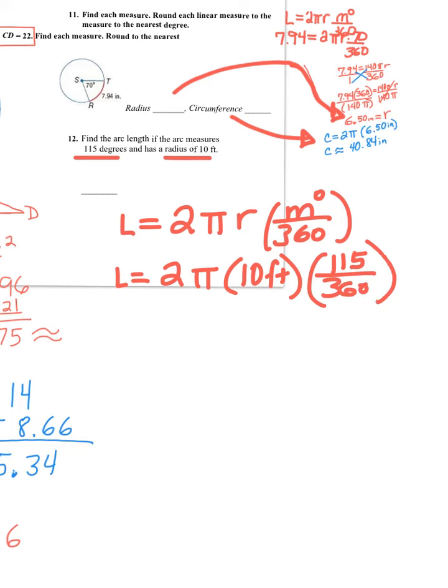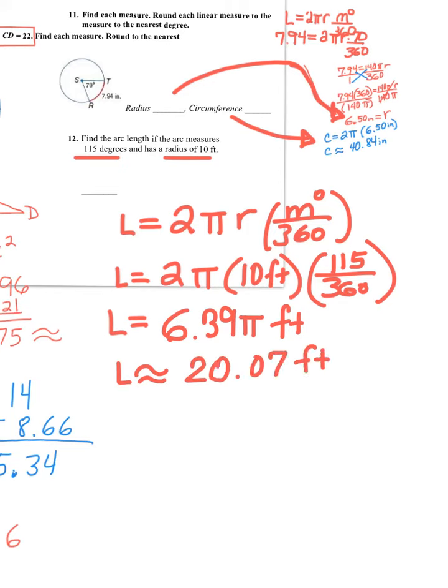Then, just put all of that into the calculator. Now, if you want the exact answer, because this one doesn't specify how they want the answer. So, the exact, you just multiply 2 times 10. So, it's 2 times 10 is 20, and then times 115, divided by 360, and the exact, so you don't put the pi in the calculator, is 6.39 pi, and this is feet. But now, if they want the approximate answer, then you put the pi, and that gives you 20.07 feet. So, that's number 12.